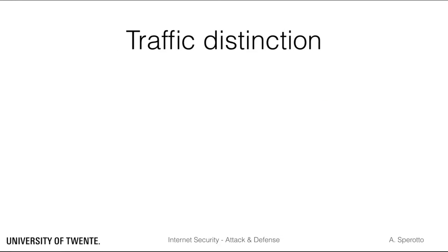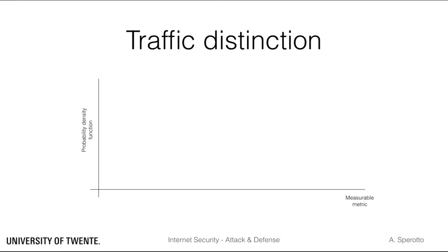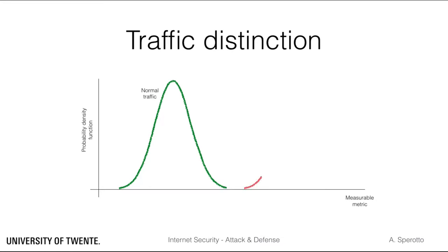Let's assume we have defined a certain metric that we can compute from malicious and benign traffic. A metric can be as simple as a payload length or as complex as the likelihood of a sample to be malicious, computed by a statistical model. Over a large set of samples we are then able to observe how the possible values of this metric are distributed. For example, let's assume they are distributed in this way.